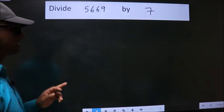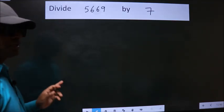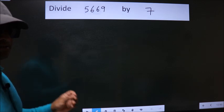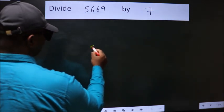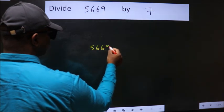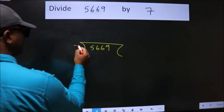Divide 5669 by 7. To do this division, we should frame it in this way: 5669 here, 7 here.